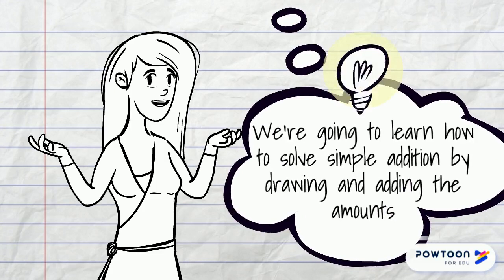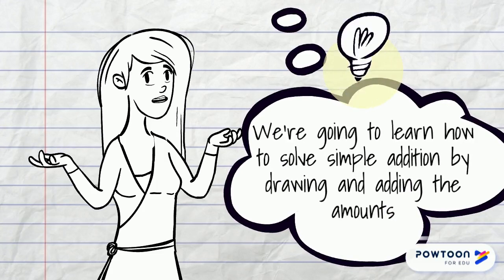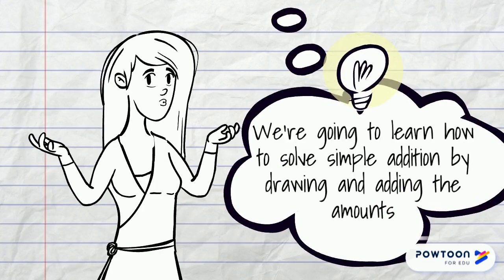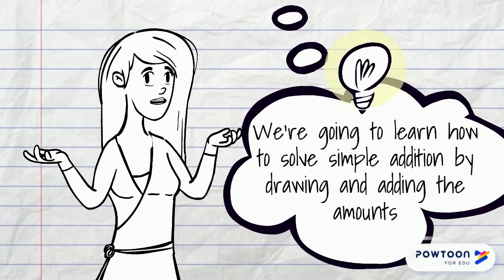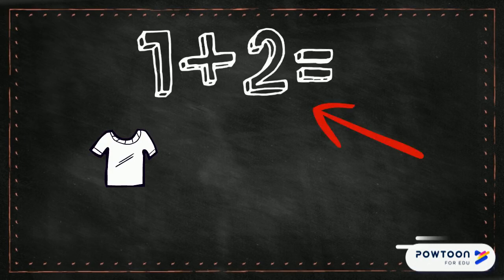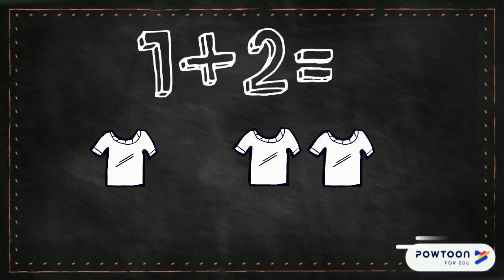Hi everyone, today we're going to be learning how to do simple addition by drawing and adding the amounts. One plus two. Each number tells me the amount of objects I need to draw. This number tells me I need to draw one object and this number tells me that I need to draw two objects. Let's count how many we have all together.